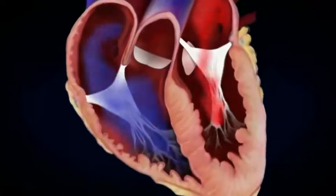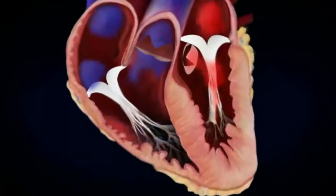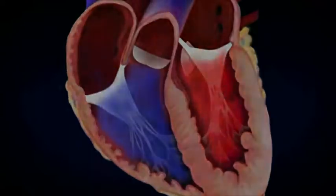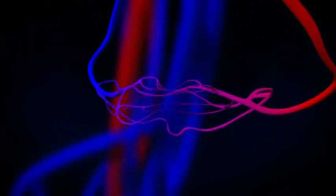All of our major arteries initially branch out from the aorta to form the arterial portion of the circulatory system. Smaller vessels, called arterioles, branch off from the arteries, and these in turn branch off even further to become tiny vessels called capillaries.